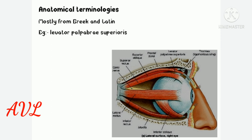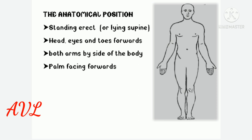Anatomical terminologies: most anatomical terms originate from Greek and Latin words. For example, levator palpebrae superioris muscle, which is the muscle of the superior eyelid. The anatomical position describes the relationship of one body part to other body parts by imagining a person standing in an artificial posture used as a standard reference in the medical profession. The person is described as standing erect with head, eyes and toes directed forwards, both arms by the side of the body, and palms facing forward.